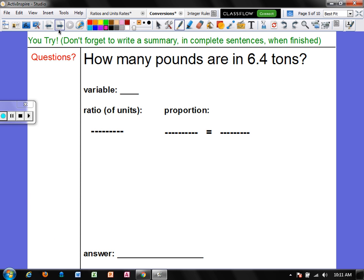Alright, now it is time for you to try. Figure out how many pounds are in 6.4 tons. And if you do not have your STAAR chart, write this down: 1 ton equals 2,000 pounds. Alright, make sure you show all of your work and all of your steps and bring these notes to class with you and we will see you next class day.